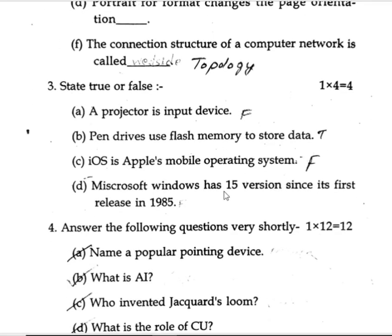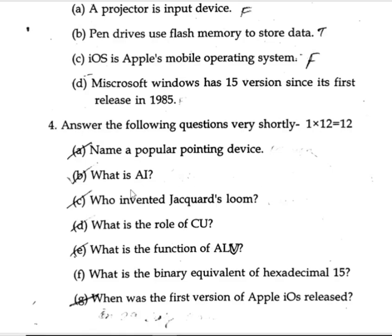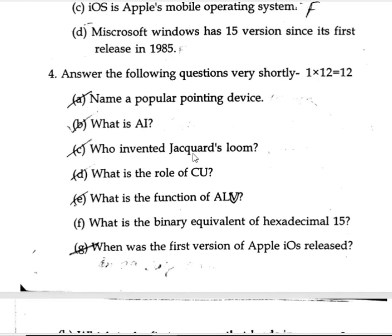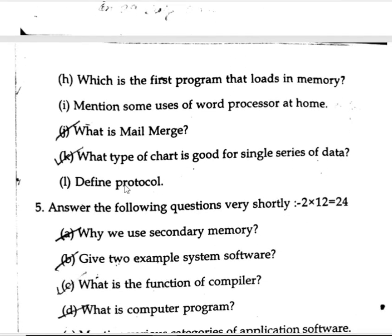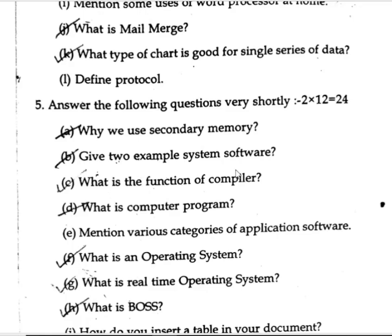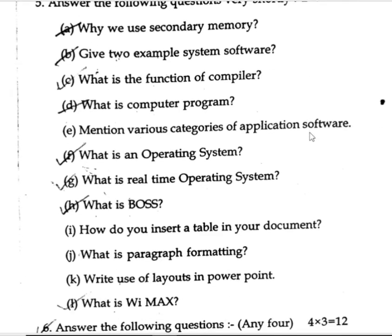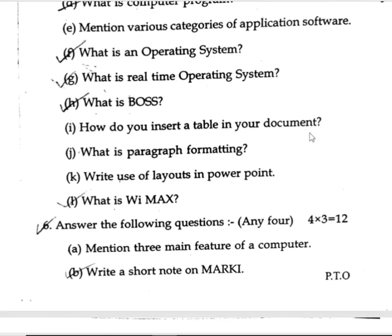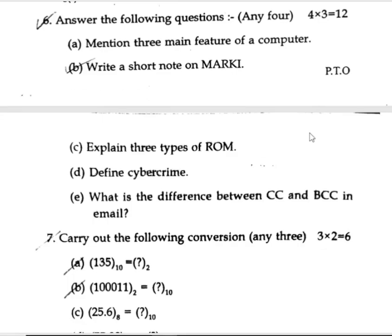True or false: 1 into 4. Then given questions: 1 into 12. Short answer questions include: What is AI? What was invented? What are the rules of CPU? What is the function of the ALU? What is mail merge? This is a very important question section.